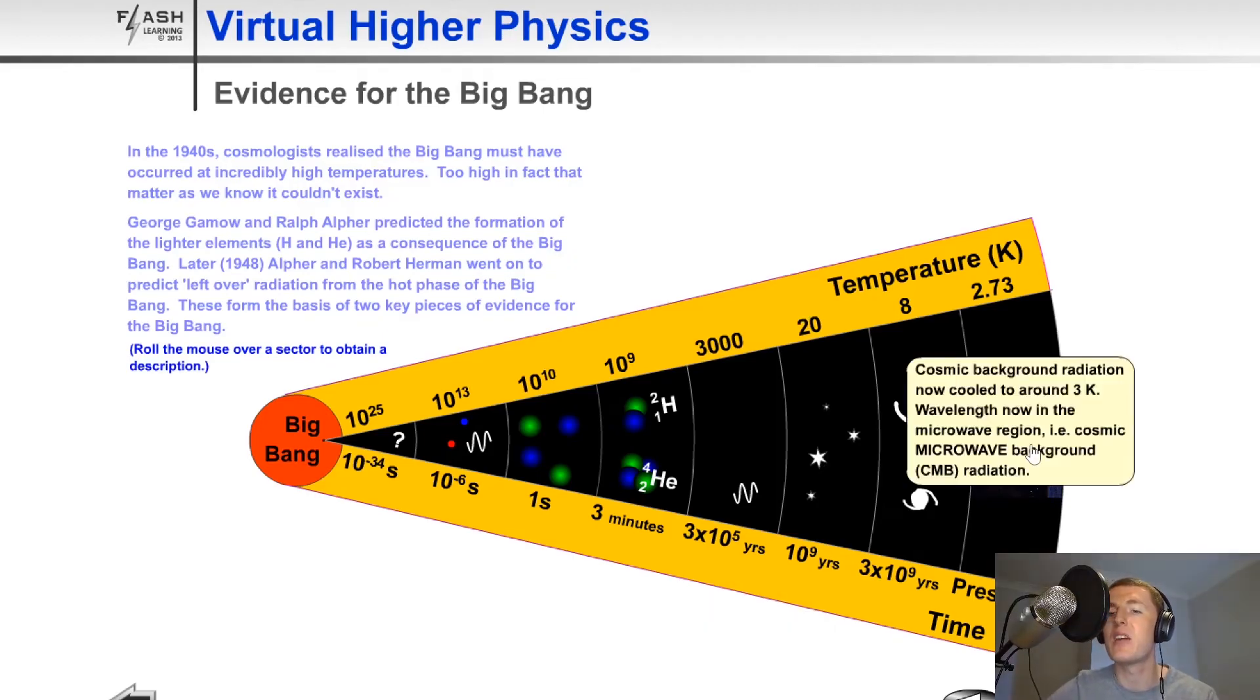And now we get to the present day where cosmic microwave background radiation has now cooled to about 3 Kelvin, actually about 2.7 Kelvin. The wavelength of this radiation that was emitted at the time of the Big Bang is now thought to be in the microwave region. This is known as Cosmic Microwave Background Radiation, or CMBR.